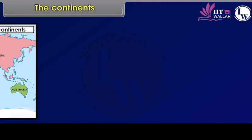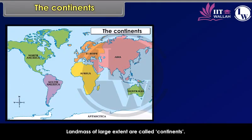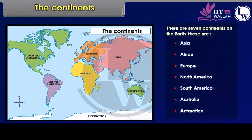Large land masses of large extent are called continents. There are seven continents on the Earth. These are Asia, Africa, Europe, North America, South America, Australia, and Antarctica.